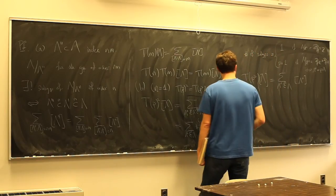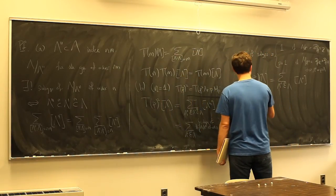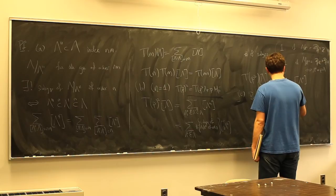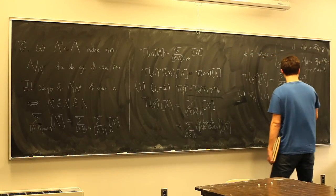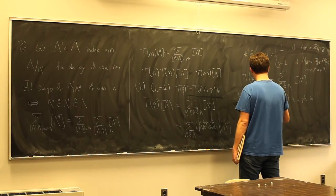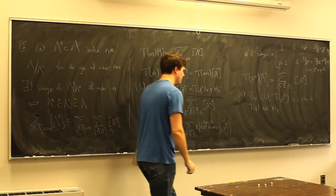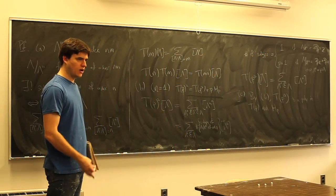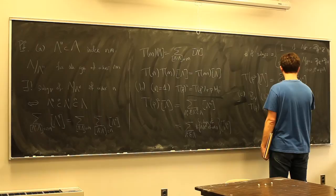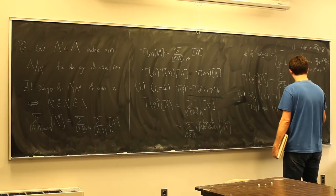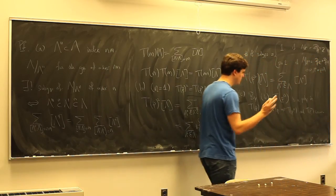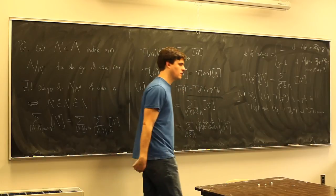Part (c) — commutativity — is now easy. By part (b), T(p^n) is a polynomial in T(p) and H_p inductively. It's clear that all Hecke operators commute with homothety operations, so the T(p^n) all commute with each other. By part (a), everything factors into coprime pieces, so T(m) and T(n) commute for all m, n.